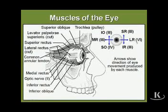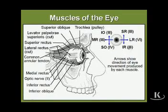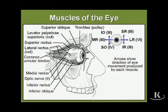From the abducted or laterally deviated position, if we elevate, we're testing the superior rectus, which is the third nerve. And if we depress, we're testing the inferior rectus, which is also the third nerve.